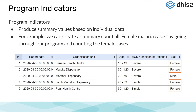We will start by covering the concept of program indicators and combined indicators. These indicators provide a way to produce calculated values based on data elements from tracker and event programs. For example, we could generate a count of the number of events in the malaria case management program where the gender is female. You would have already seen a version of this when you created pivot table style reports giving counts from event data in the event reports app. Program indicators, however, can be used in the data visualizer and the maps applications, not just within event reports and the event visualizer. These therefore become important depending on the type of outputs you need to produce.